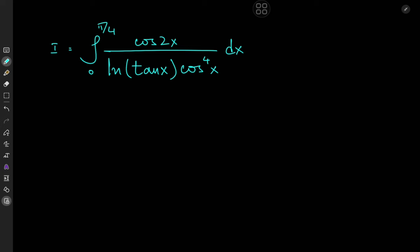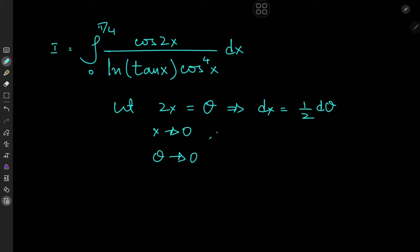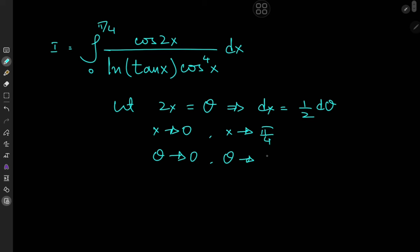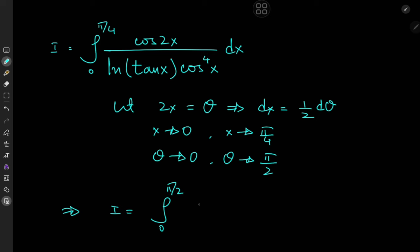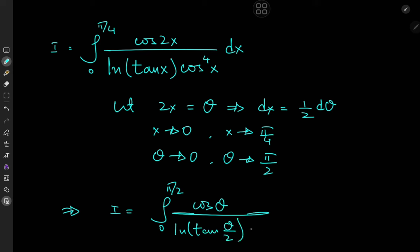What do I want to do here? I have a tangent x term, so I might as well leverage that by use of a substitution. We're going to let 2x equal θ, which implies that dx equals 1/2 dθ. As x approaches 0, we have θ approaching 0 as well, and as x approaches π/4, we have θ approaching π/2. This implies that the target integral I equals the integral from 0 to π/2 of cosine θ divided by log(tan(θ/2)) times cosine to the fourth power of θ/2 dθ, with a factor of 1/2 outside because of the differential element.